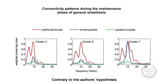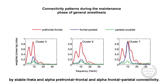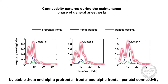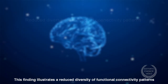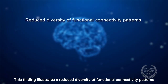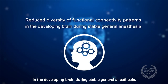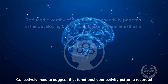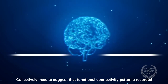Contrary to the authors' hypothesis, connectivity patterns during the maintenance phase of general anesthesia were dominated by stable theta and alpha prefrontal-frontal and alpha frontal-parietal connectivity. This finding illustrates a reduced diversity of functional connectivity patterns in the developing brain during stable general anesthesia.